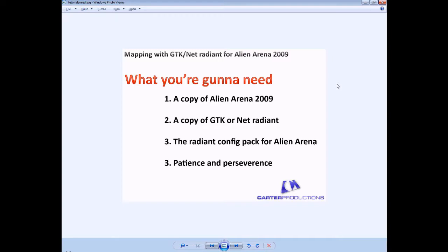If you don't know where to get a copy of Alien Arena 2009, take a look over on the right — the link is there. Download a copy and get it installed onto your system somewhere. I'm going to assume that you already have a copy of Alien Arena on your machine and you're just looking at how to start mapping in Radiant.